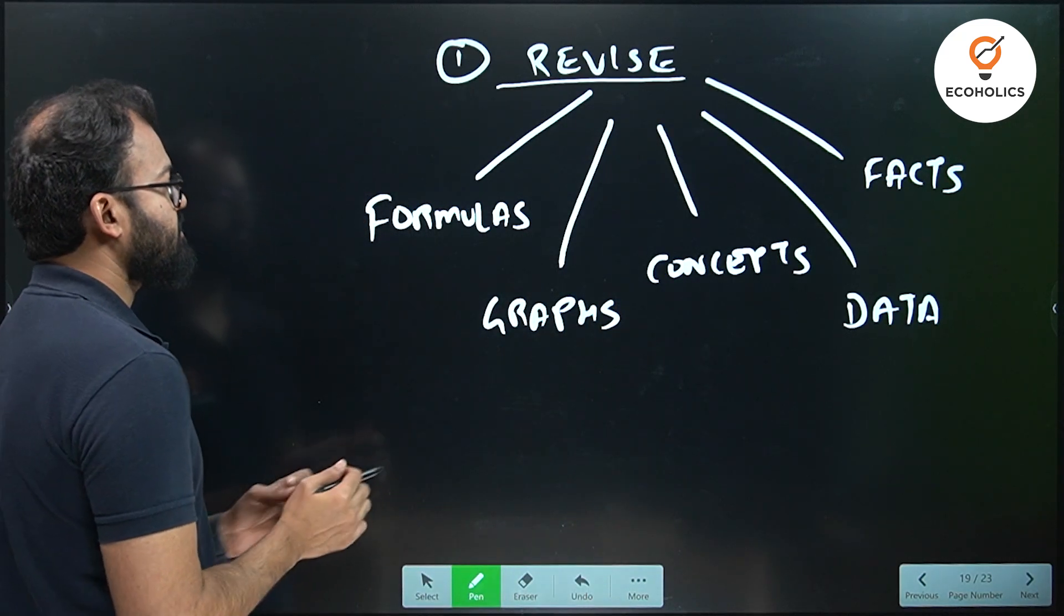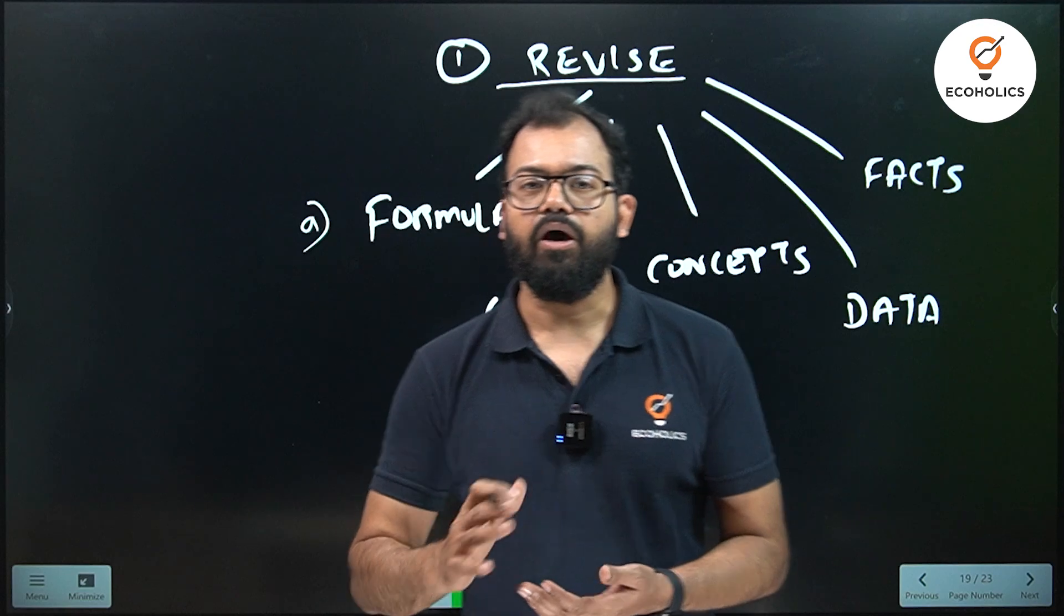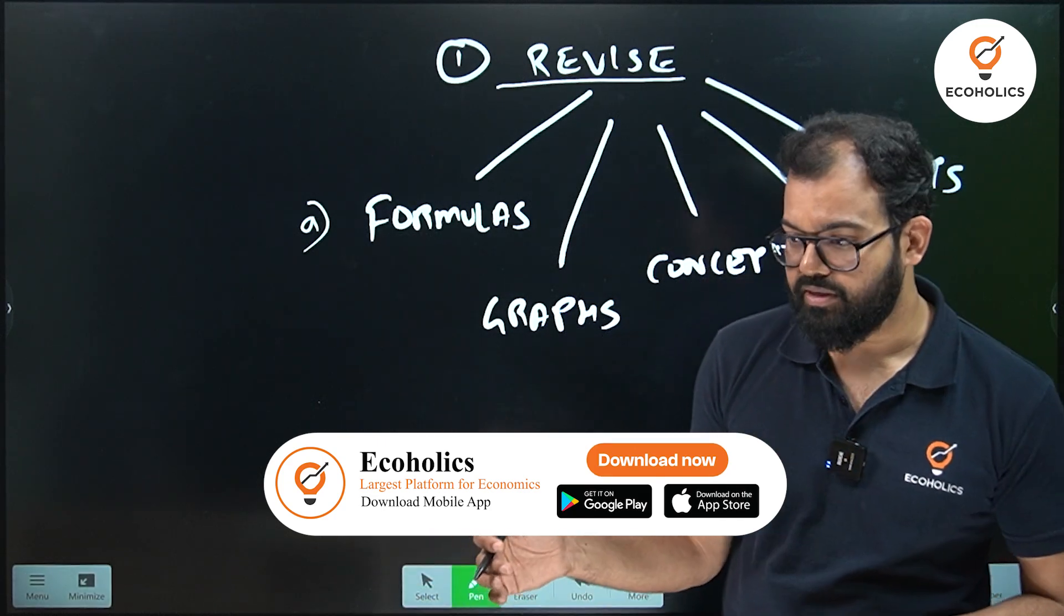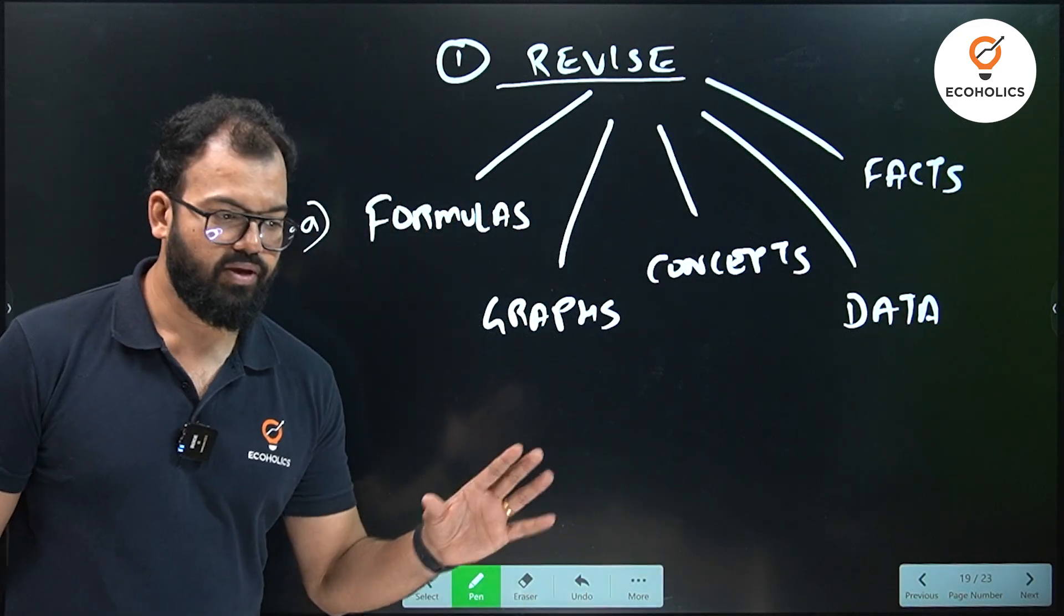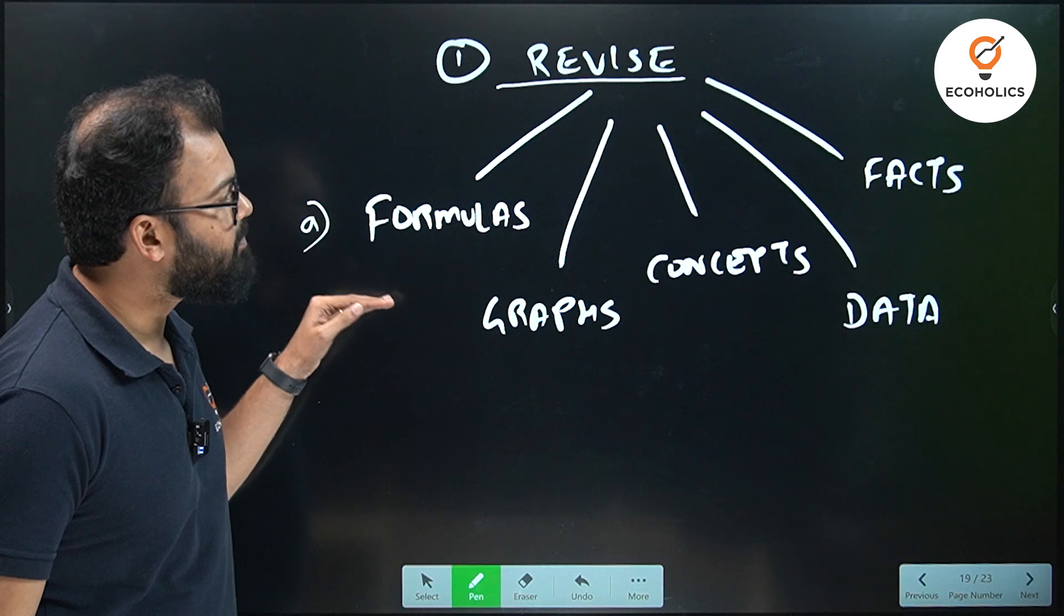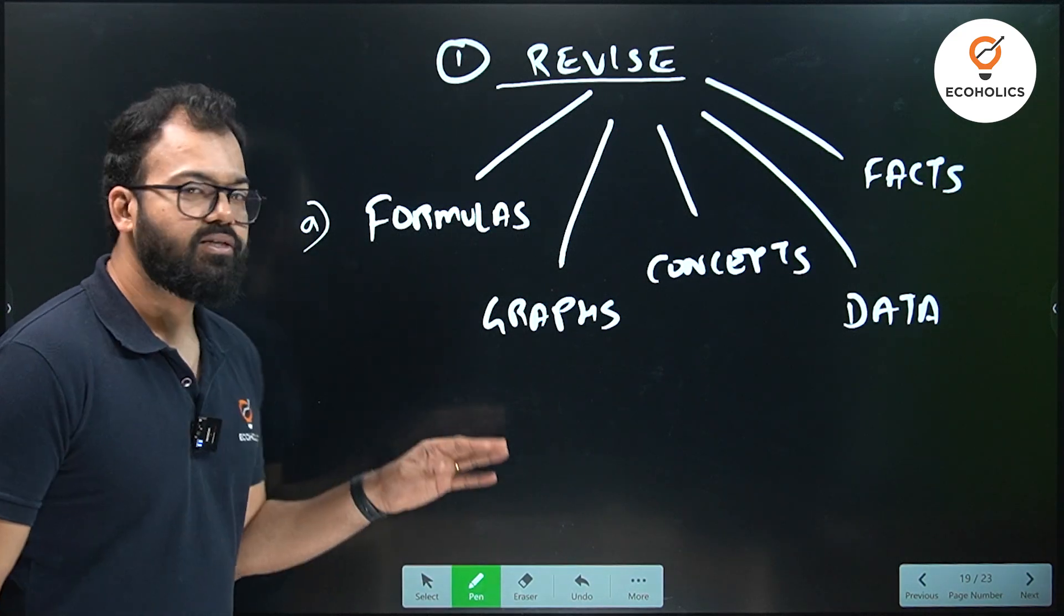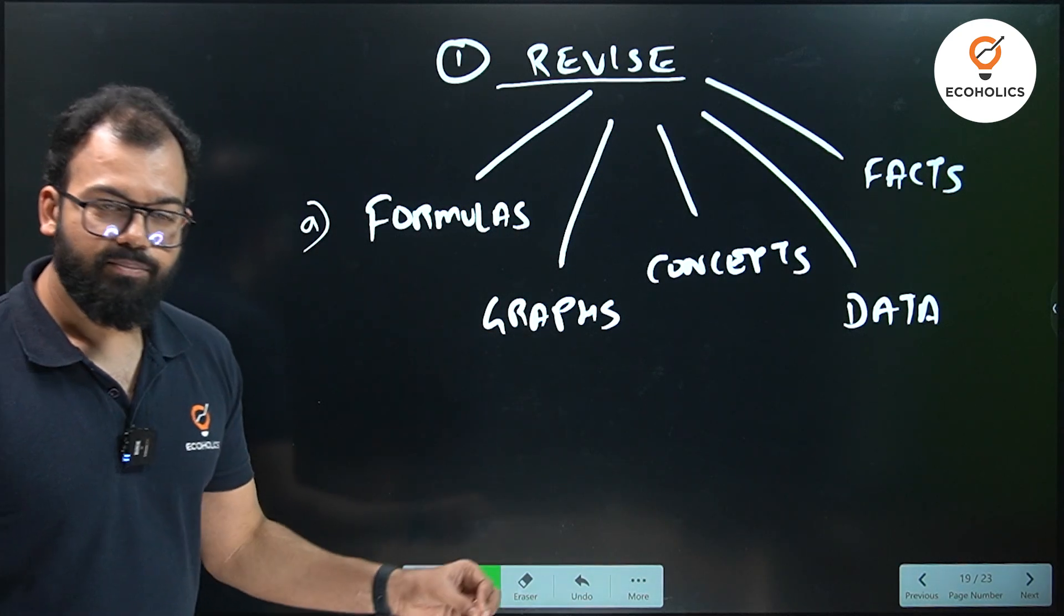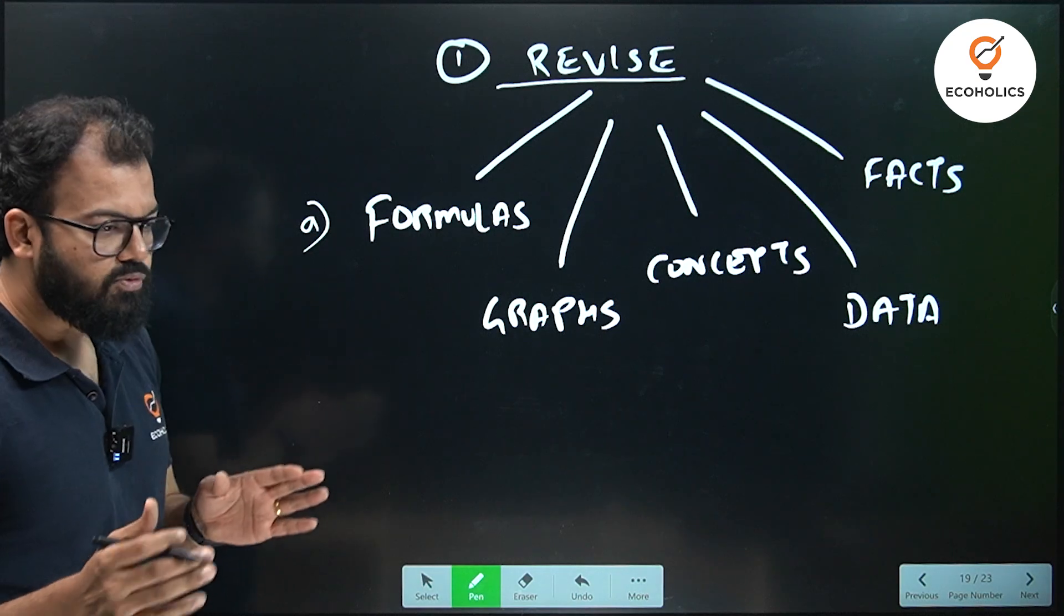Now what exactly we need to revise? Point A: formulas. Formulas are important - national income formula. In every economic subject, formulas are there: micro, macro, public finance, even in growth and development like Harrod-Domar. There are certain formulas. We have the formula sheet if you want that - the link is given in the description. The formula sheet will help you in compiling things - utility function, production function, formulas of econometrics, formulas of statistics. Revising formulas is very important and you should develop a formula sheet before attempting this examination so that it will be easy for you to revise.